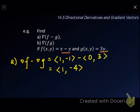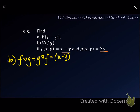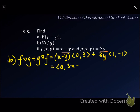For the second example, when we want to find the gradient of the product fg, it equals f times gradient of g plus g times gradient of f. So f is x minus y, and gradient of g is (0, 3) as found earlier, plus g which is 3y, multiplied with gradient of f which is (1, -1). We get the first vector (0, 3x minus 3y) and for the second vector (3y, negative 3y).